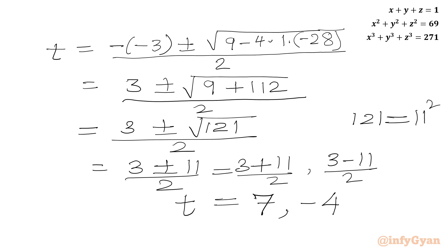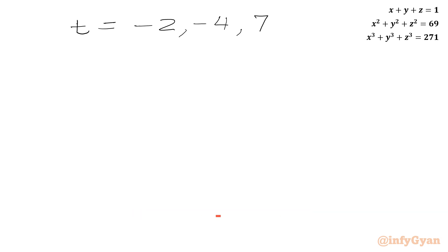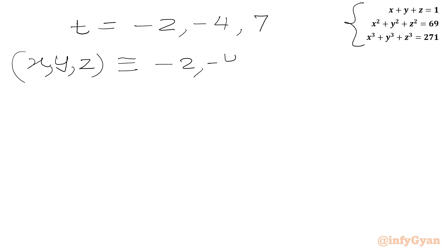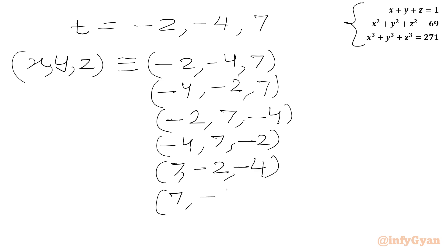Our base solution was minus 2, and the three roots are t equals minus 2, minus 4, and 7. Since the original equations are symmetrical, we consider all permutations of the triplet (x, y, z): (−2, −4, 7), (−4, −2, 7), (−2, 7, −4), (−4, 7, −2), (7, −2, −4), and (7, −4, −2). So in total we have 6 solutions.